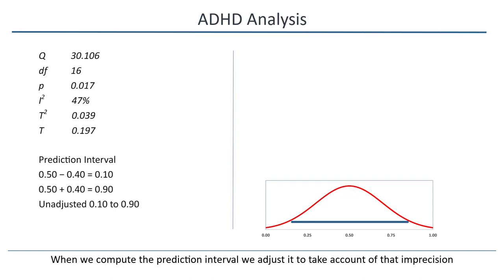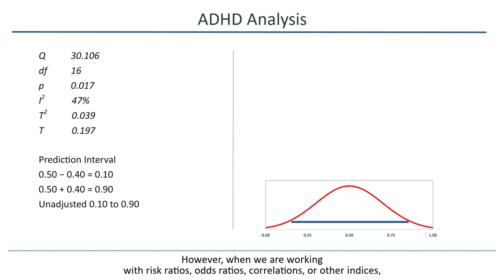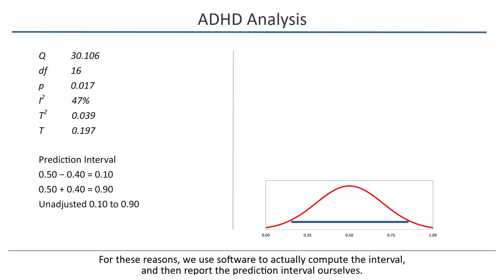Second, when the effect size is a mean difference or a standardized mean difference, we can get a rough estimate of the interval using the mean plus or minus two standard deviations, as the mean and the standard deviation are all in the same metric. However, when we're working with risk ratios, odds ratios, correlations, or other indices, the mean is reported in one metric while the standard deviation is reported in another metric. Therefore, we need to convert all the numbers to a common metric before computing the prediction interval. For these reasons, we use software to actually compute the interval and then report the prediction interval.